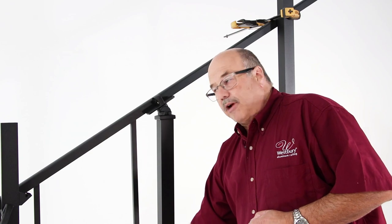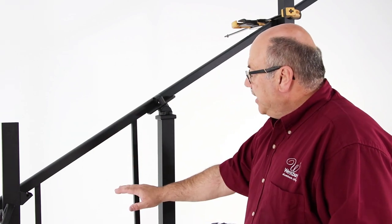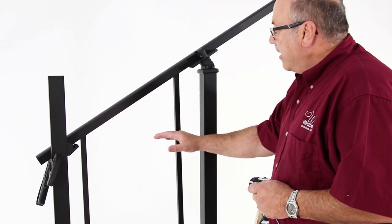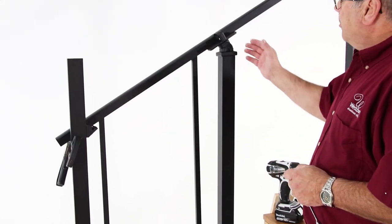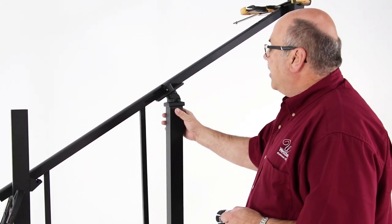I have cut my bottom rail to the correct length. I have reset and put my top rail apparatus back in place with the two balusters. We have cut the post off to the specific length.